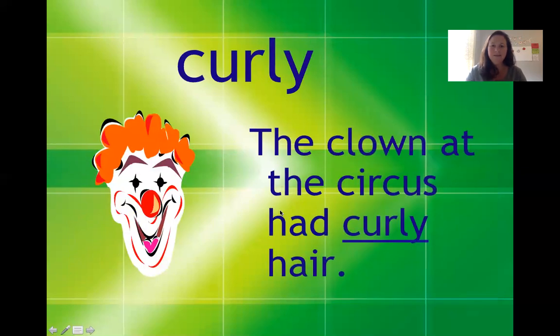This one here is curly. And we just went over the word straight. And curly is an antonym of straight. And curly is also an adjective that tells us more about the clown's curly hair. So looking at this sentence, the sentence says the clown at the circus had curly hair. So it's not straight. It has curves or twists on it. So that's what curly means.